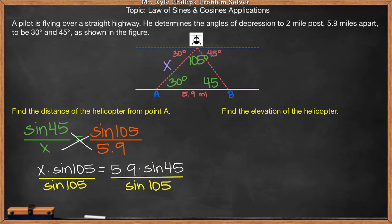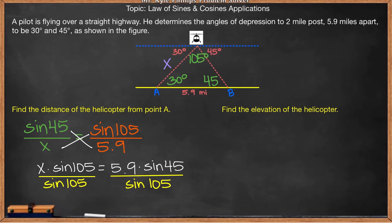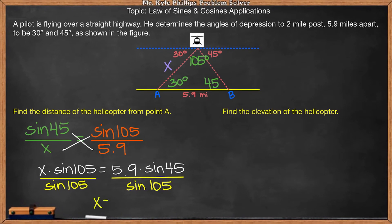Now this ratio is the value of x. When you're typing this in on your calculator, you're going to want to make sure that your calculator mode is in degrees because all of the angle references you were given are in degrees. So I will type in 5.9 times sine of 45 and divide that by sine of 105 and I should be getting 4.32. So x here is 4.32 miles. So that's the distance from the helicopter to mile post A.